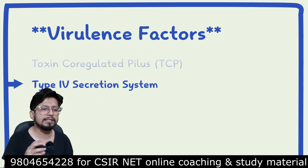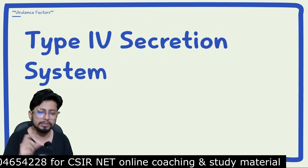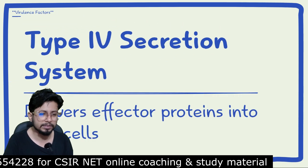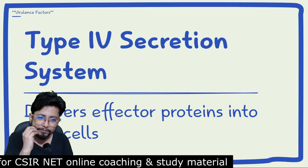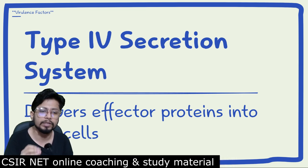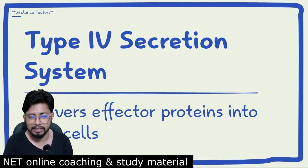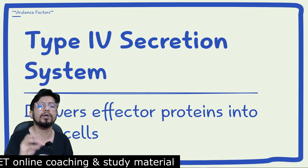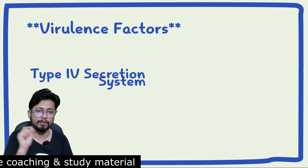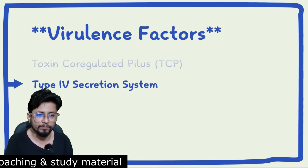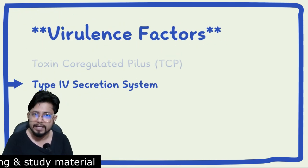The third virulence factor is the type 4 secretion system. With the help of the type 4 secretion system, Vibrio cholerae can deliver effector proteins into the host cell.